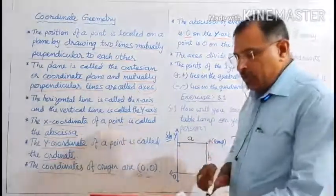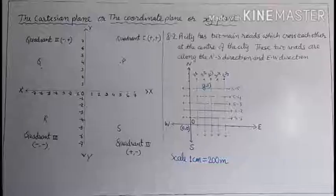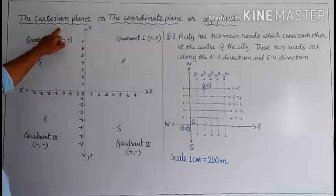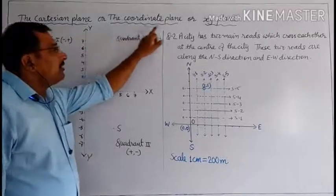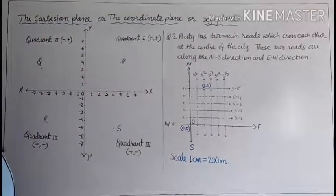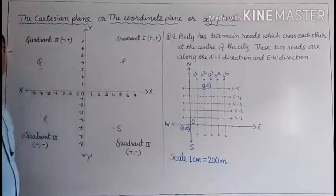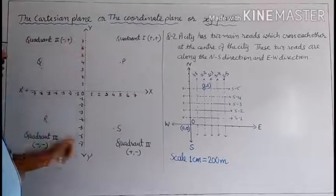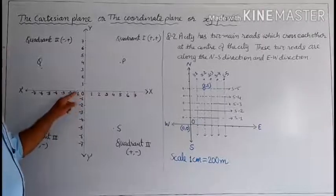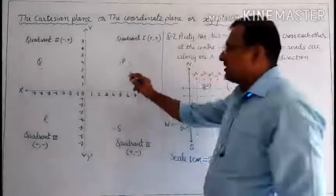Now we will discuss the first, second, third and fourth quadrants. In the Cartesian coordinate plane — also called the coordinate plane or XY plane — the plane is divided into 4 parts by the vertical and horizontal lines. The horizontal line is called X axis, the vertical line is called Y axis, and they intersect at a point called origin with coordinates (0, 0). These 4 parts are called 4 quadrants.